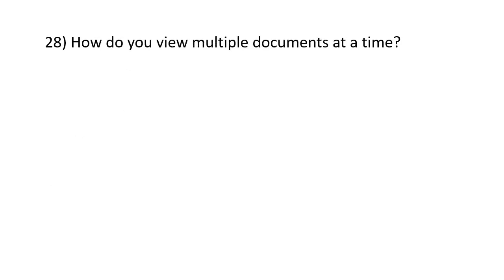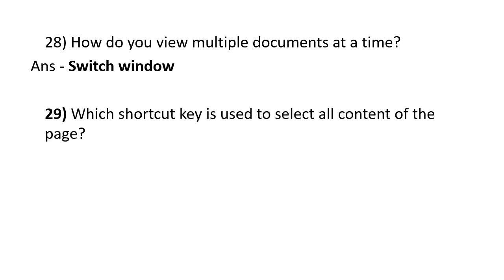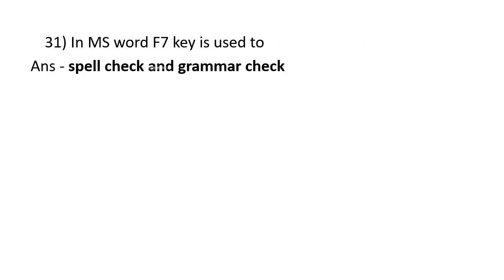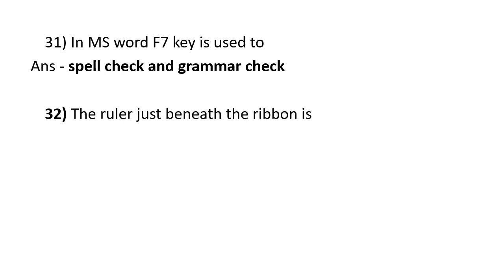How do you view multiple documents at the same time? Switch window. Which shortcut key is used to select all content of the page? Control plus A. What is the action of Control plus B? Bold highlighted selection. In MS Word, the F7 key is used for spell check and grammar check. The ruler just beneath the ribbon is a vertical ruler.